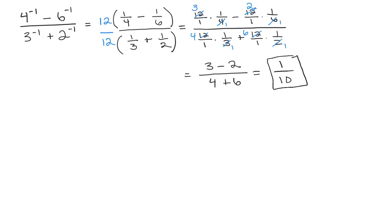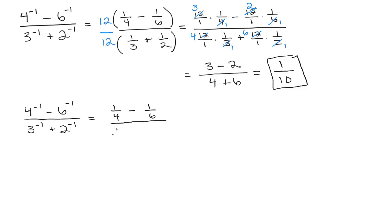You can get the same answer by doing the same problem using Method 1. I'll do it quickly, and you can see it's not quite as simple. First, I would again write these without the negative exponents. Since it's not a single fraction in the numerator and denominator, you'd have to get a common denominator in the numerator and a common denominator in the denominator, so that you can subtract and add those fractions.